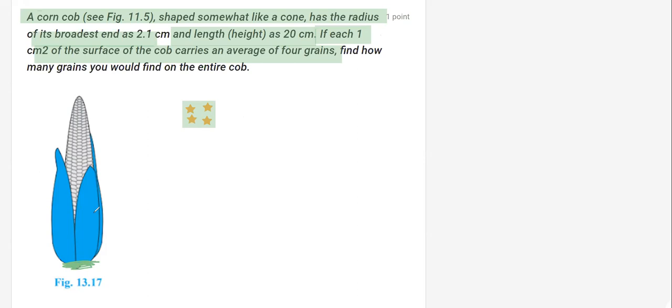Continuing with this question, what information do we have? We have radius as 2.1 centimeters and the height, which is given as 20 centimeters. You should know the height here, although mentioned as length, is the vertical height. Now we know that for calculating the curved surface area of a cone, the formula is πrl. It means we need to get l.